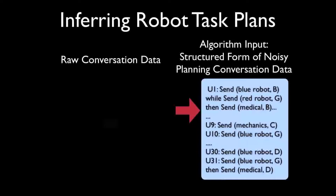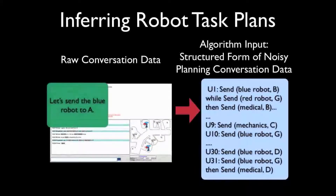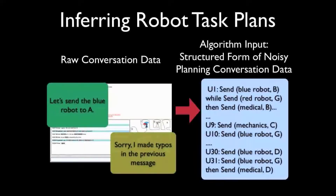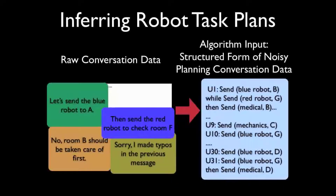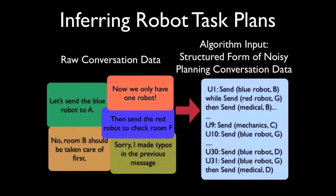We transformed the raw conversation into a more structured form. This structured form contains the actions discussed and the relative ordering among those proposed actions for each utterance. This form of data captures many characteristics of human conversation that make plan inference challenging.